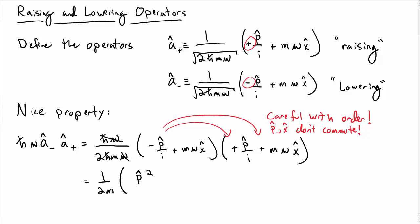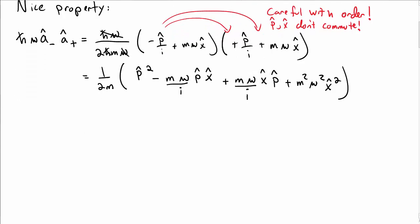Get some ħω that cancel, so I have P̂²/(2m) minus Mω P̂X̂/i plus Mω X̂P̂/i plus M²ω² X̂². Okay, so that's what I get when I distribute that through.